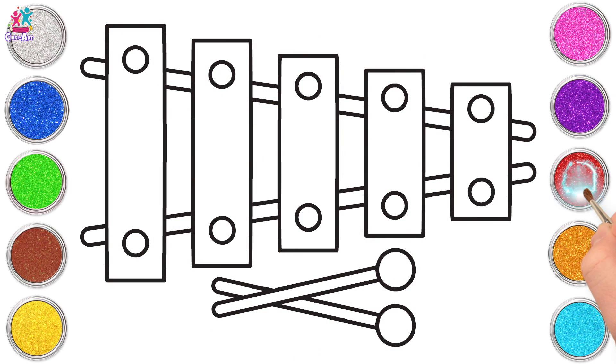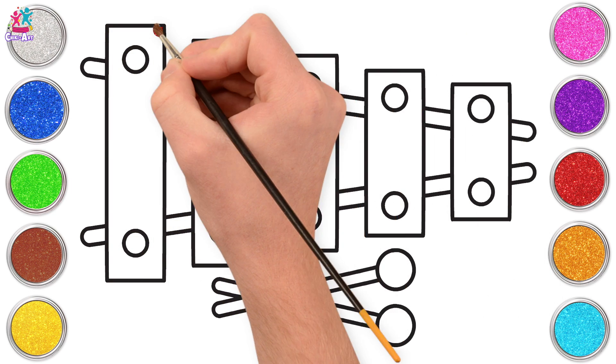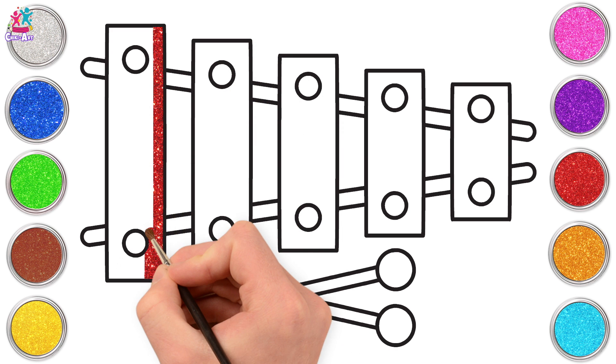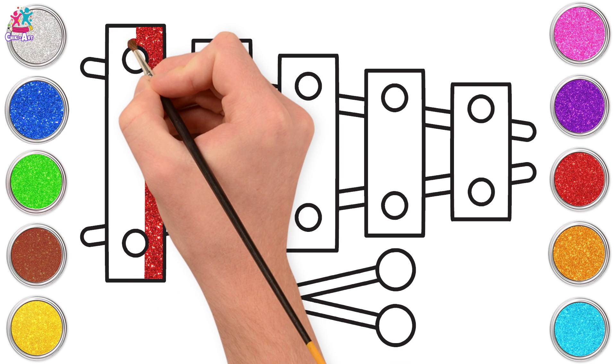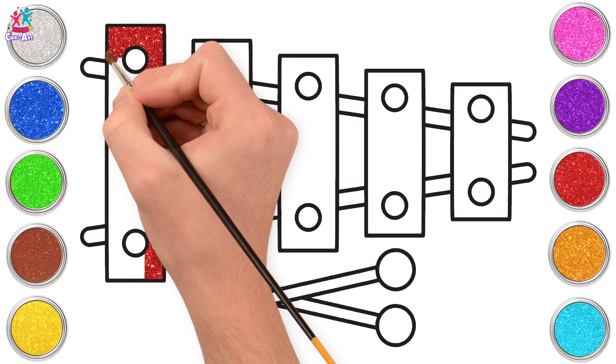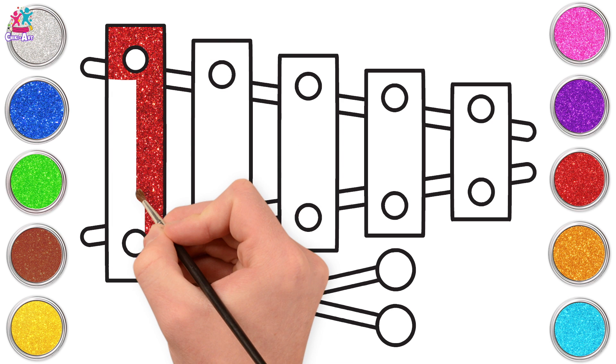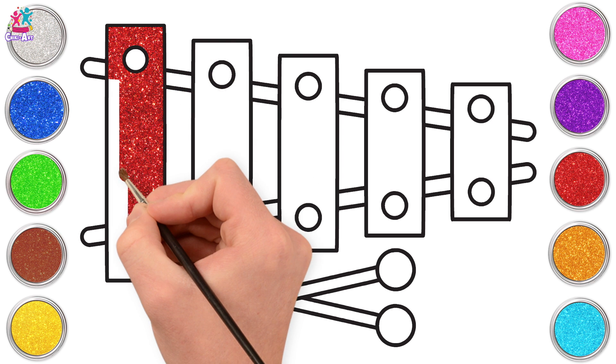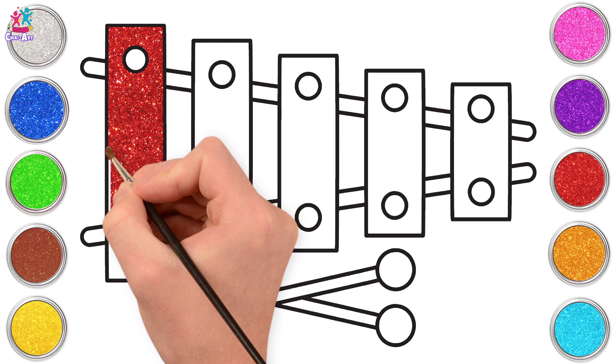Starting with red. We're going to paint our first rectangle, taking care to paint around our circles. Beautiful! Do you play an instrument? Which instrument do you play?